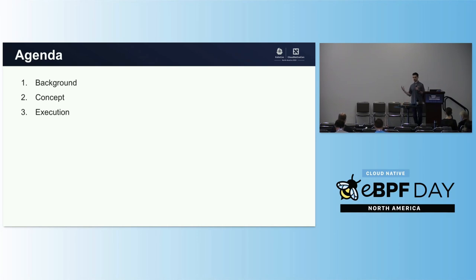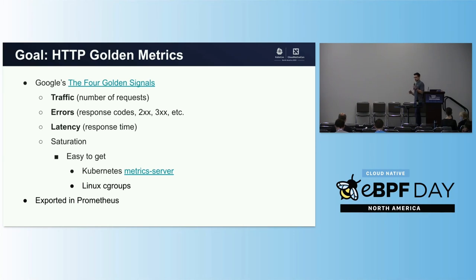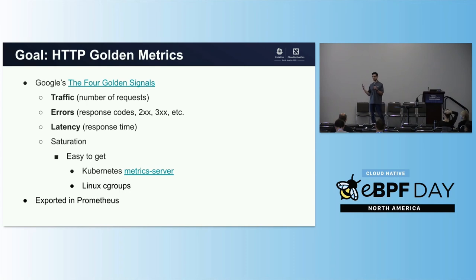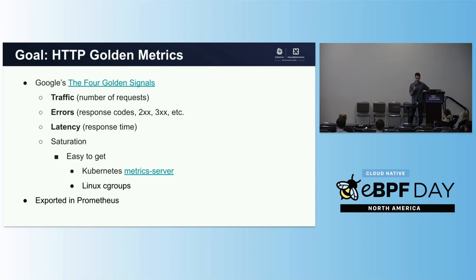I'm going to talk about the concept and then the execution of attempting to expose these metrics purely in BPF. So, the background: most of you are probably familiar with golden metrics. Google defines them as: if you can only focus on a certain set of metrics, you'd want to focus on traffic — number of requests — errors in terms of response code bucketed by 2XX, 3XX, and then latency, which will end up being the most complex to support. And saturation, which I'm not going to talk about much today as it's outside the scope. You can get it pretty easily through the Kubernetes metrics server or CPU/memory utilization off the Linux machine. Then I'll show how you might export something using Prometheus and integrate it with existing tooling.